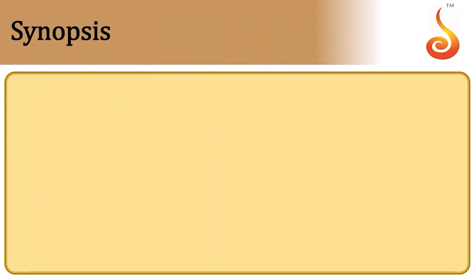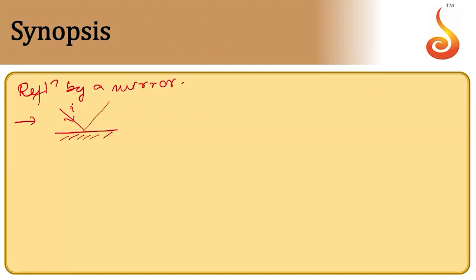If I consider reflection by a plane mirror, remember: the size of the image is same as that of the object. For a real object the image is virtual, and for a virtual object the image is real. Also remember, for a fixed incident ray, if the mirror is rotated by an angle theta, the reflected ray rotates through an angle of 2 theta — a simple but quite useful concept.